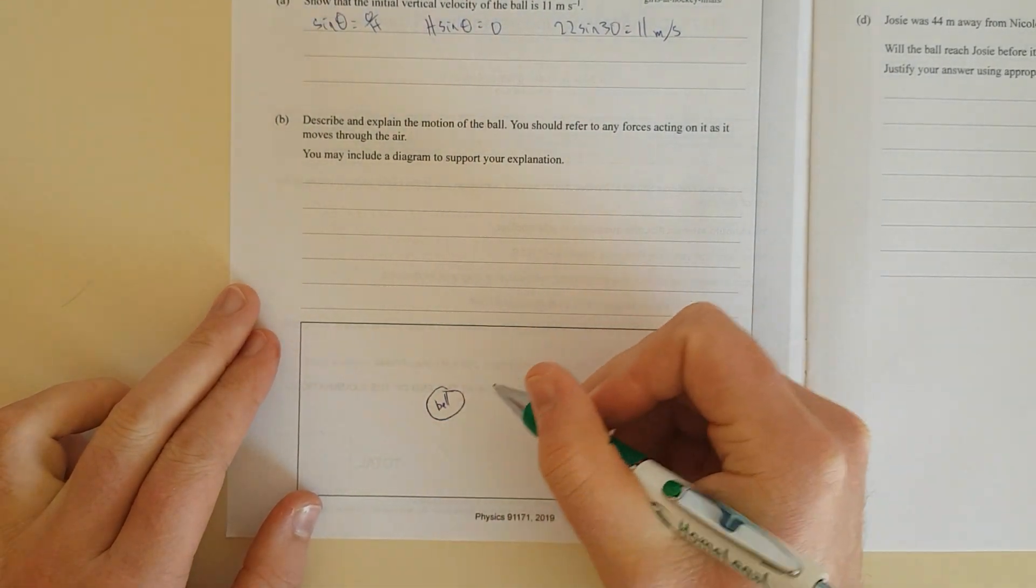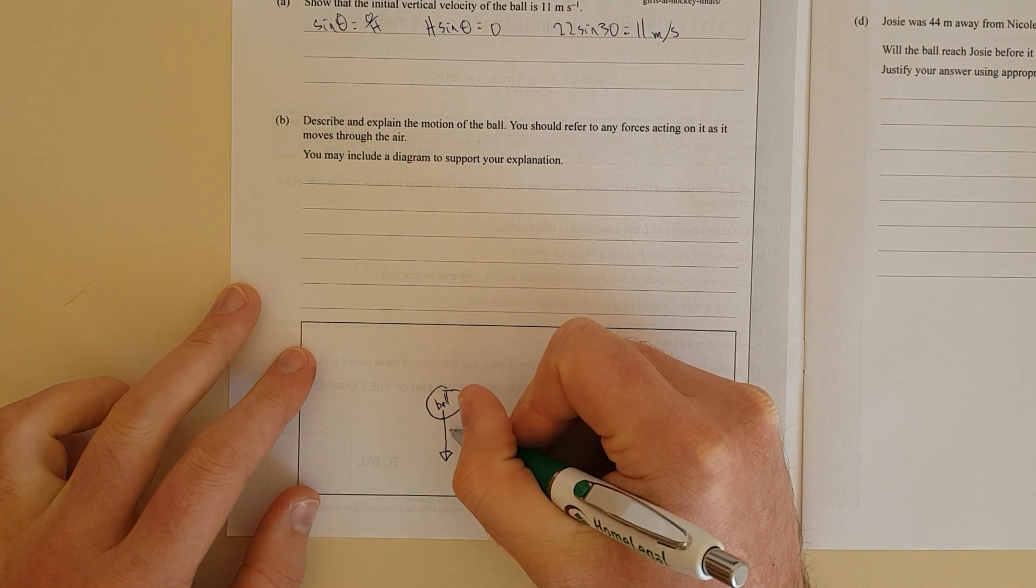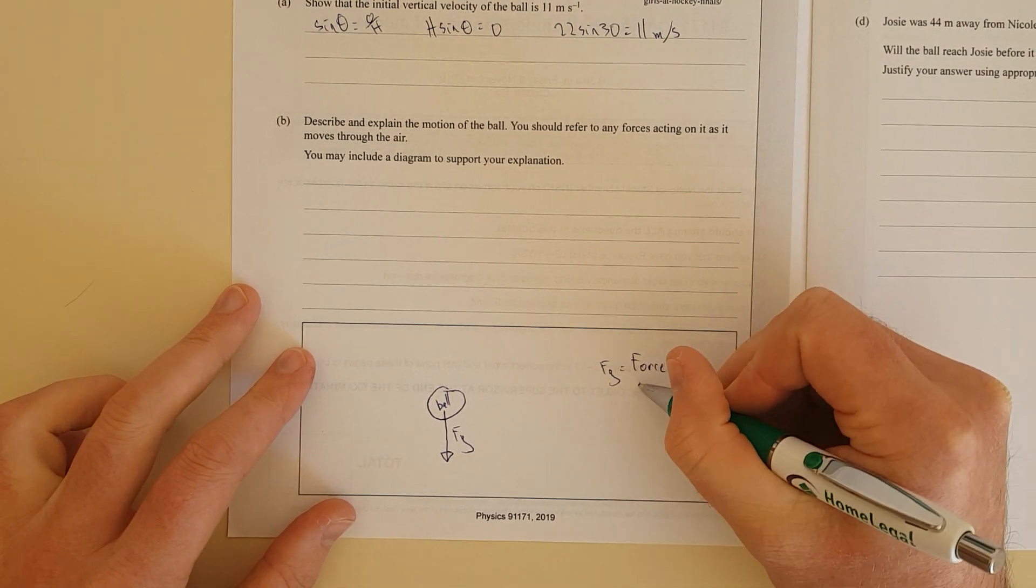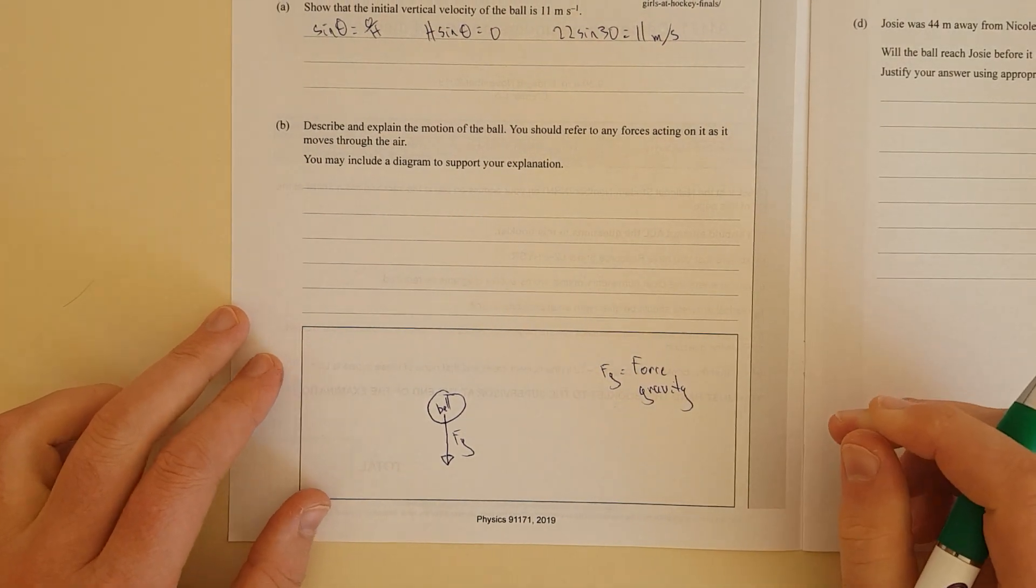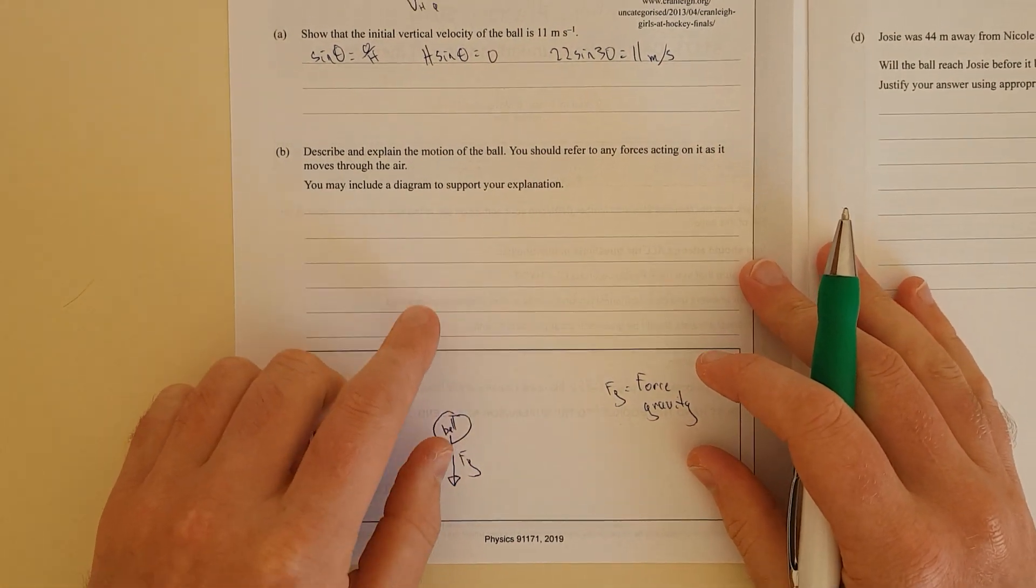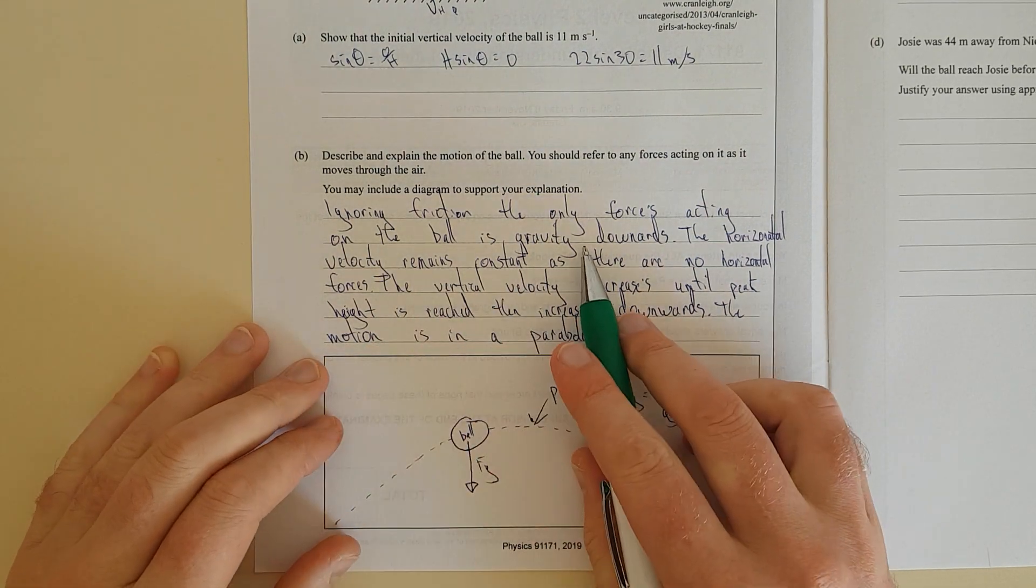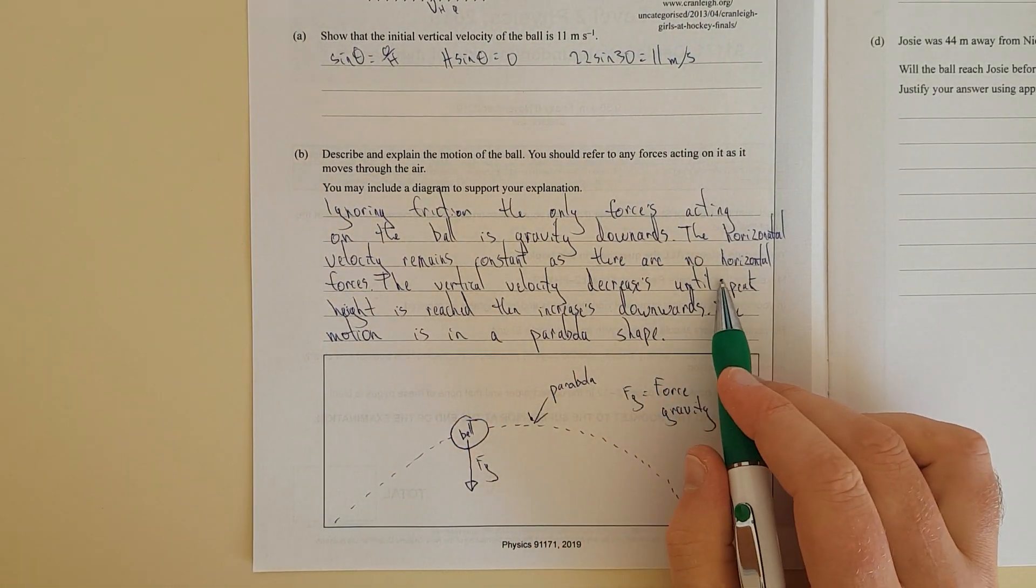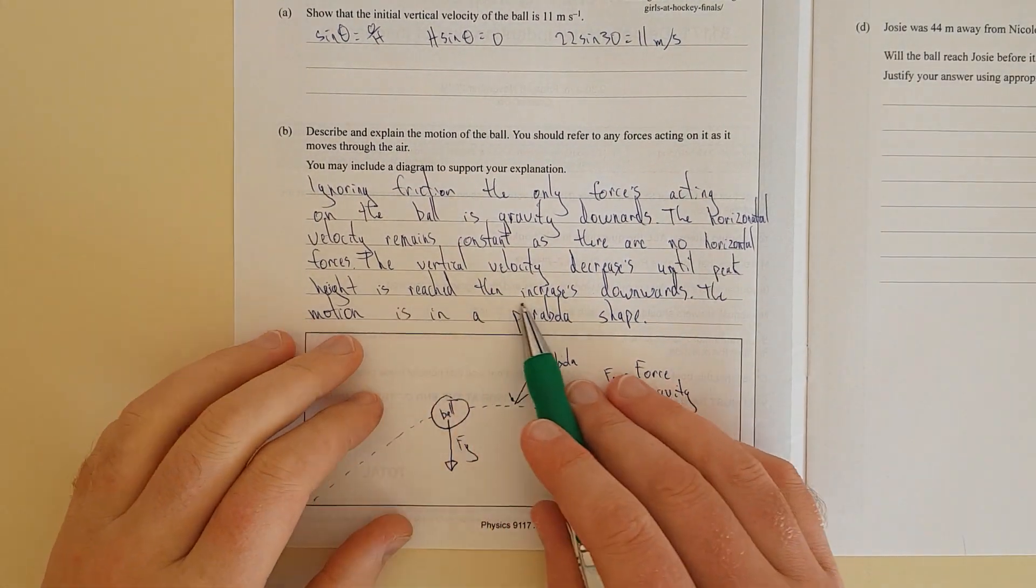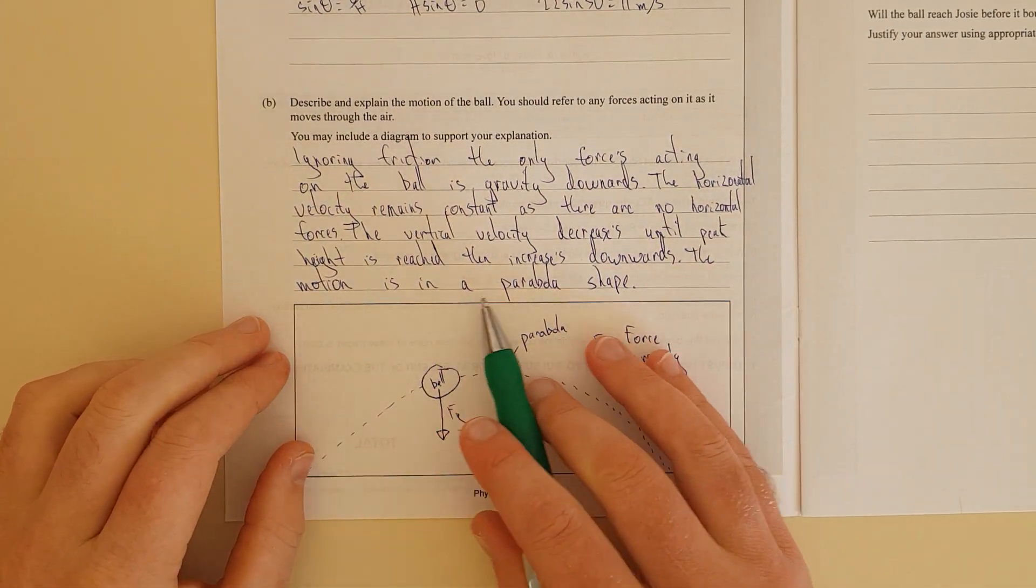From the center of mass going down, this is Fg. We're going to ignore friction. Ignoring friction, the only forces acting on the ball is gravity downwards. The horizontal velocity remains constant as there are no horizontal forces. The vertical velocity decreases until peak height is reached, then increases downwards. The motion is in a parabolic shape.